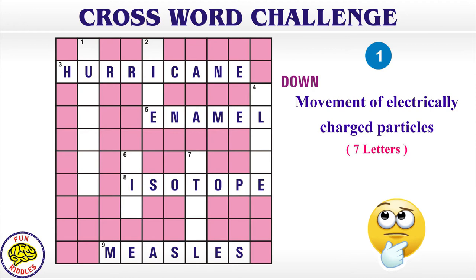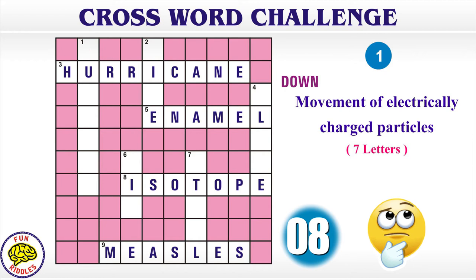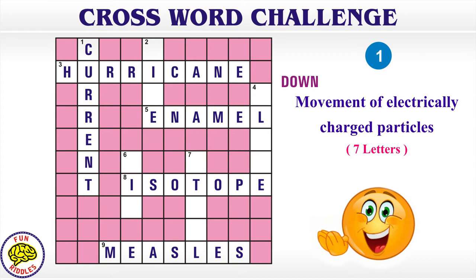1 Down: movement of electrically charged particles, 7 letters. Answer: Current.